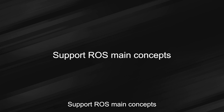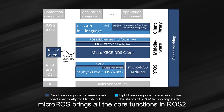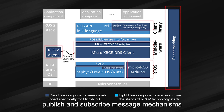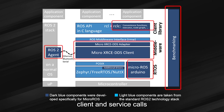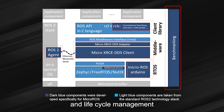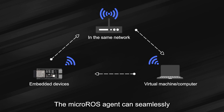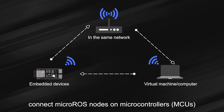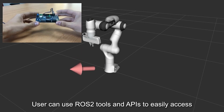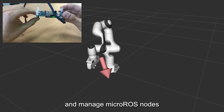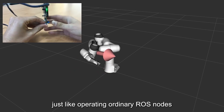Support for ROS main concepts: micro-ROS brings all the core functions of ROS 2 to the microcontroller MCU, including nodes, publish and subscribe message mechanisms, client and service calls, node graphs, and lifecycle management. Integration with ROS 2: the micro-ROS agent can seamlessly connect micro-ROS nodes on microcontrollers and ROS 2 systems. Users can use ROS 2 tools and APIs to easily access and manage micro-ROS nodes, just like operating ordinary ROS nodes.